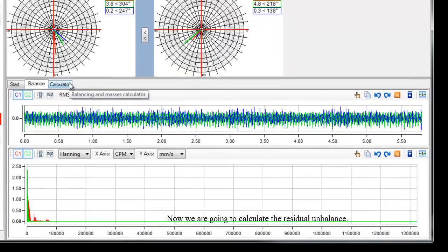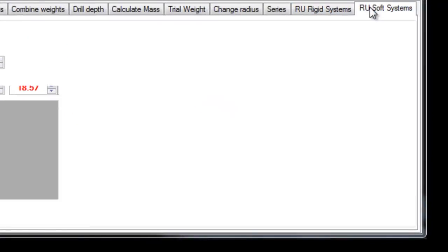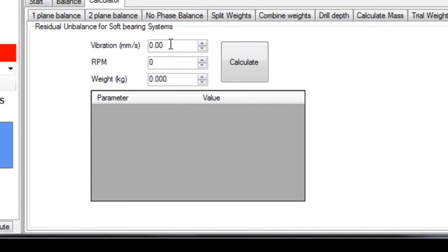Now we are going to calculate the residual unbalance. For this, type the final vibration as well as the working RPM.